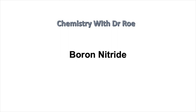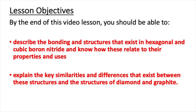Welcome to our latest video on the topic of boron nitride. This video is suitable for A-level students. By the end of this video lesson, you should be able to describe the bonding and structures that exist in hexagonal and cubic boron nitride and know how these relate to their properties and uses. You should also be able to explain the key similarities and differences that exist between these structures and the structures of diamond and graphite.